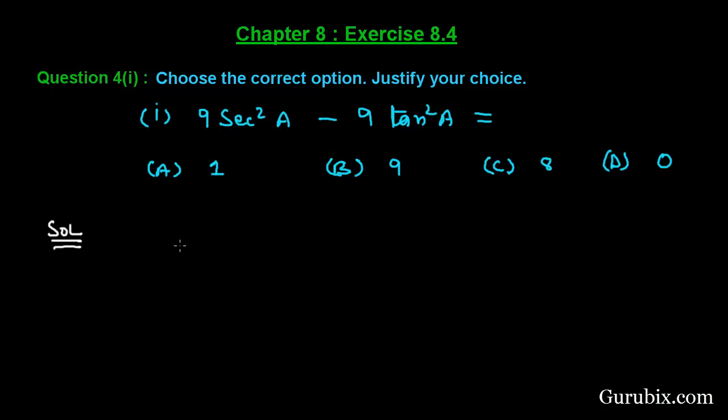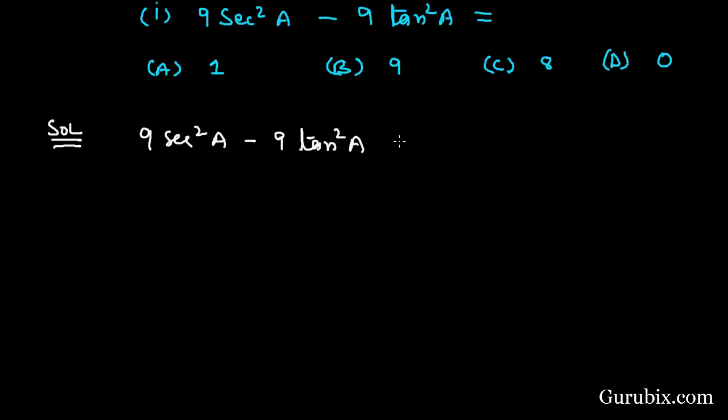We are given an identity that is 9 sec square a minus 9 tan square a and we have to calculate the value of this identity. Here we can take 9 common from both the terms, then we remain with sec square a minus tan square a.